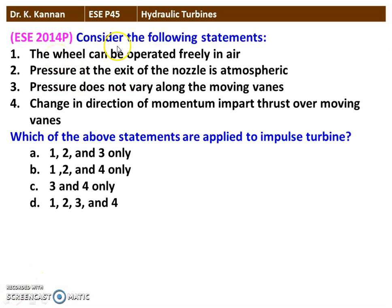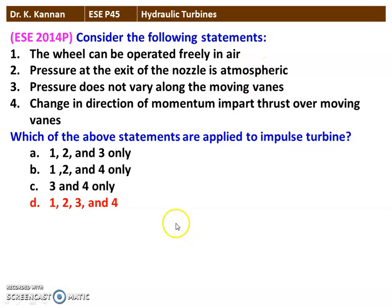The next question from the 2014 question paper — which of the following statements apply to the impulse turbine? The wheel can be operated freely in the air. Pressure at the exit of the nozzle is atmospheric. Pressure does not vary along the moving vane. The change in direction of momentum imparts thrust over the moving vane. All four statements are applicable to the impulse turbine, as the pressure drop occurs only in the nozzle.